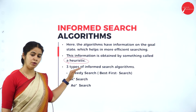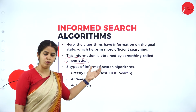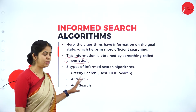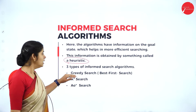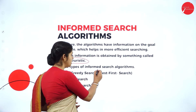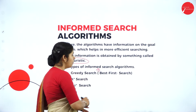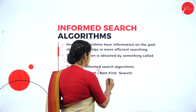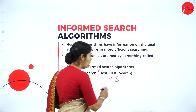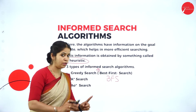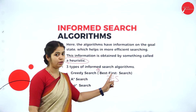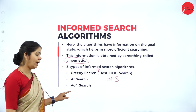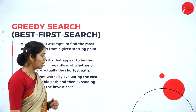There are three types of informed search algorithms we are going to discuss in the syllabus. That is greedy search, in which we discuss best first search — also called BFS, but it is not breadth first search, this is best first search. Then A-star and AO-star search algorithms.